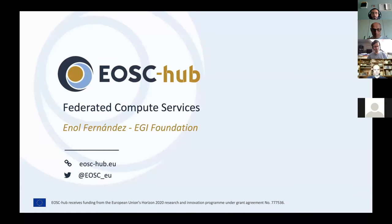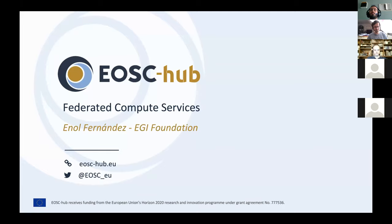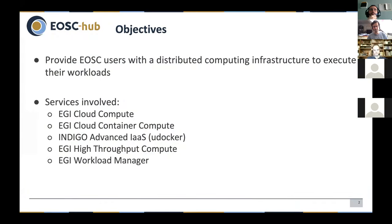I'm Manuel Fernandez working for the EGI Foundation. I will talk about the federated compute services included in the EOS project. The objective is mainly to provide EOS users with a distributed computing infrastructure to execute their workloads. We do that in different kinds of abstractions, so you can run workloads on different kinds of computing resources. The services involved include EGI Cloud Compute, EGI Cloud Container Compute, the Indigo advanced infrastructure service which is mostly a Docker tool, EGI High Throughput Compute, and the EGI Workload Manager.